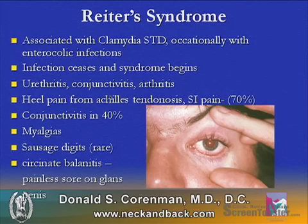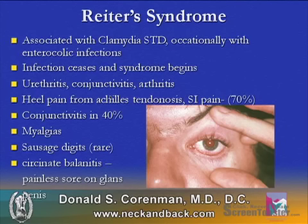Reiter's syndrome is associated with a sexually transmitted disease with chlamydia and occasionally with enterocolic infections, such as dysentery. The infection ceases and the syndrome begins as an autoimmune disease. The hallmarks are urethritis, conjunctivitis, and arthritis.